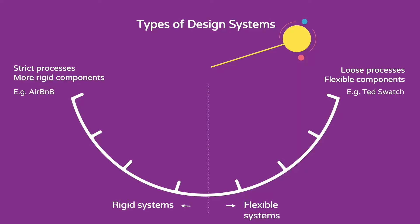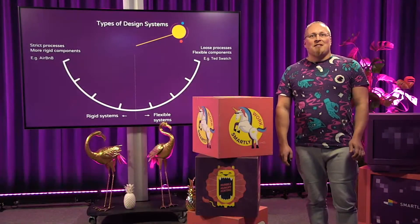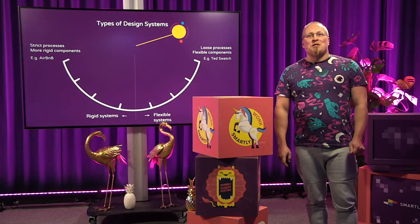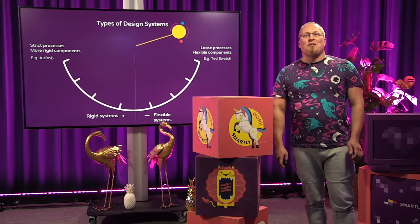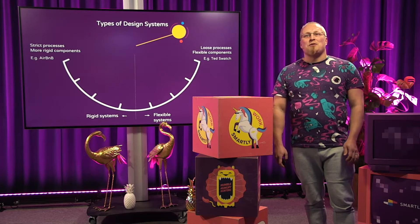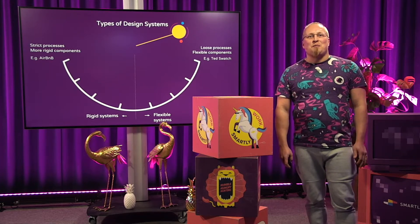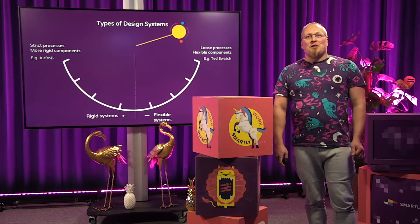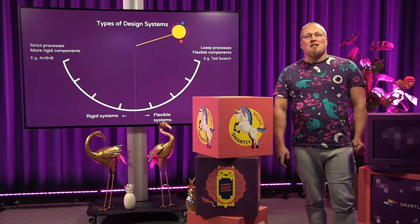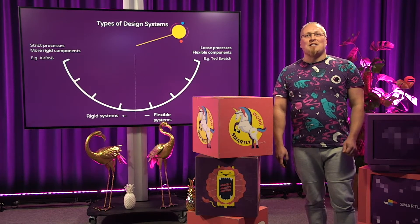So in the beginning, we landed on the spectrum way, way over the flexible side. In general, the development process was very, very flexible. For example, there were no rules, no guidelines on how we should build the system. While this enabled us to build fast, it didn't really scale.